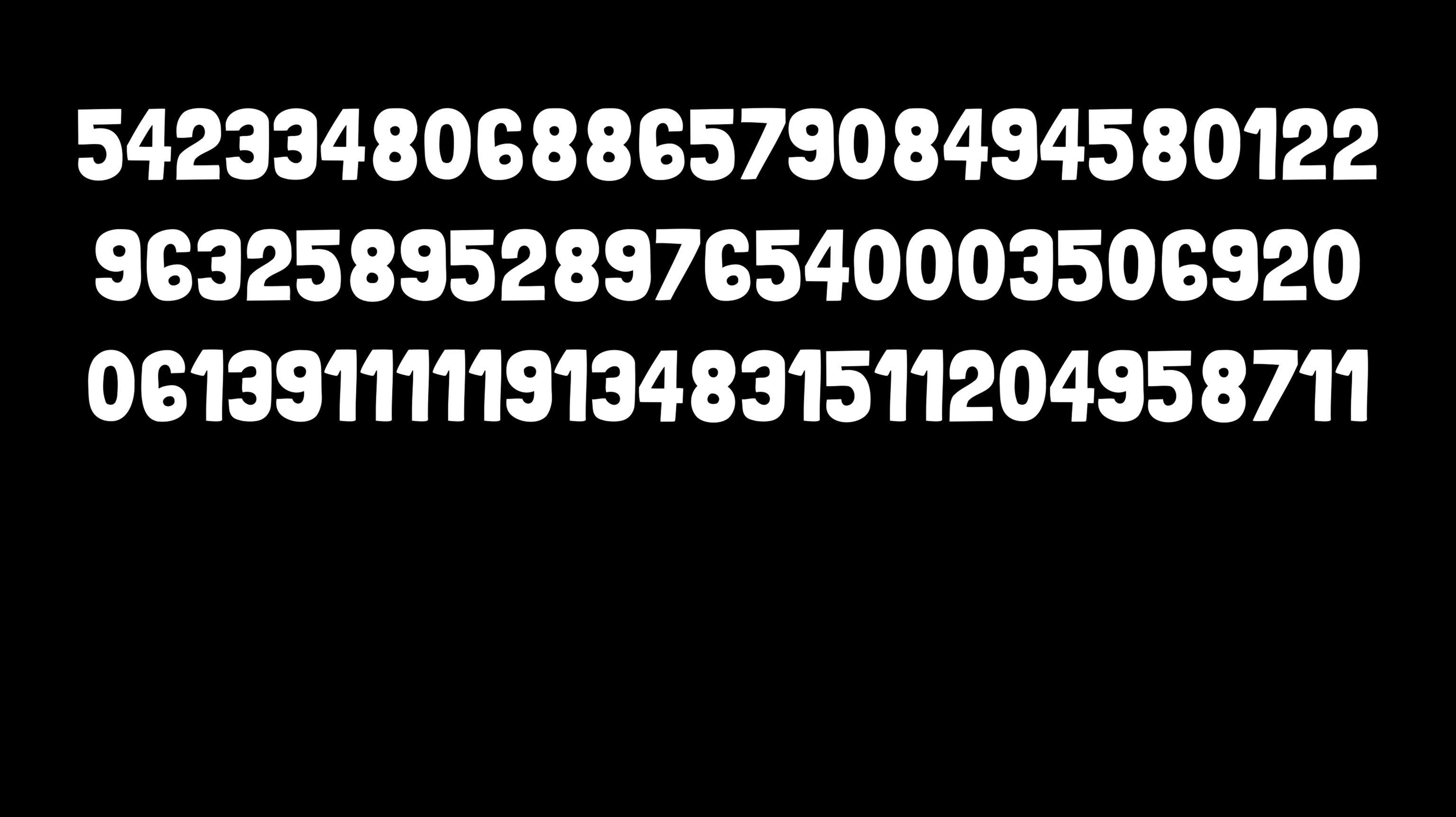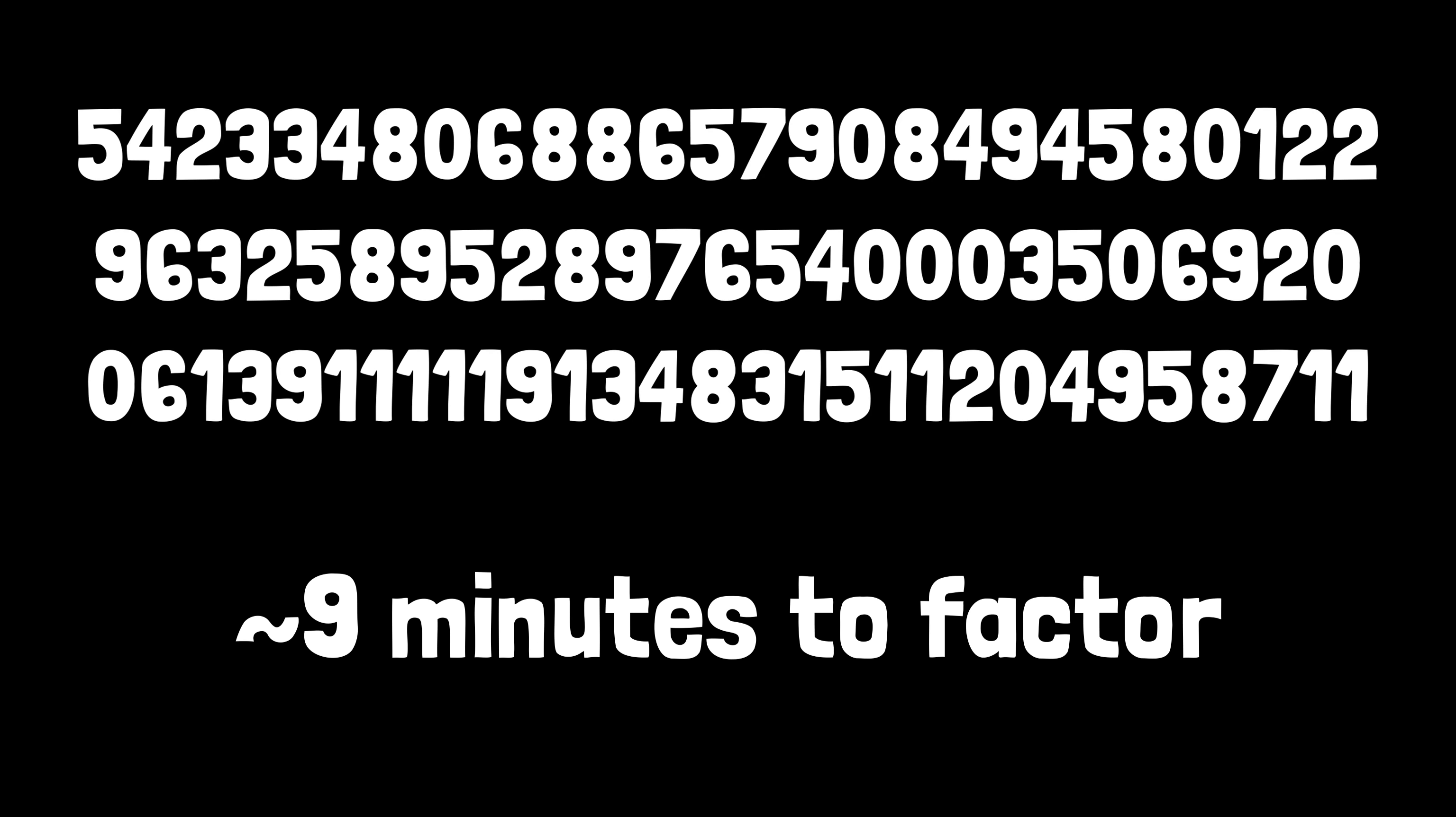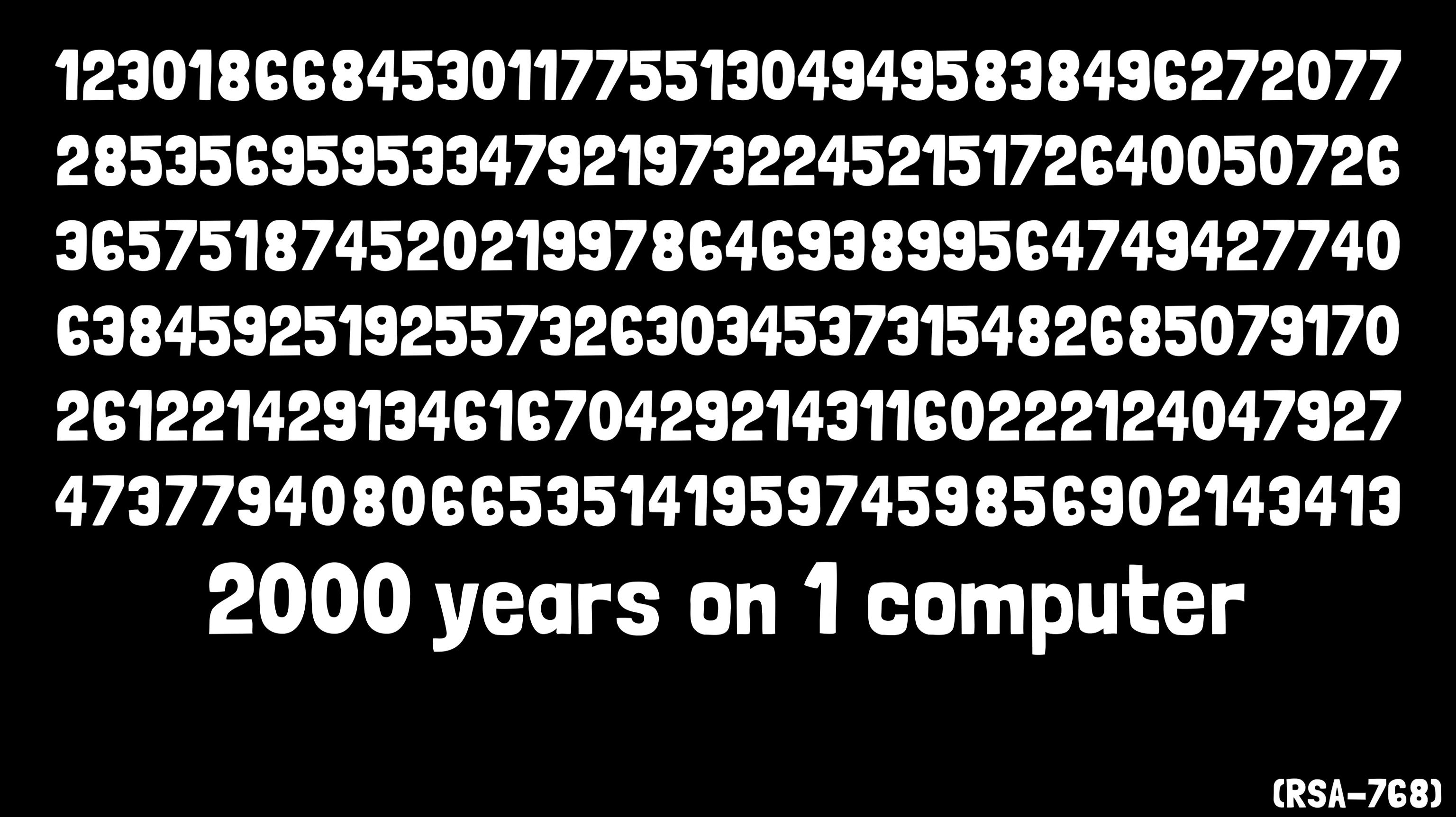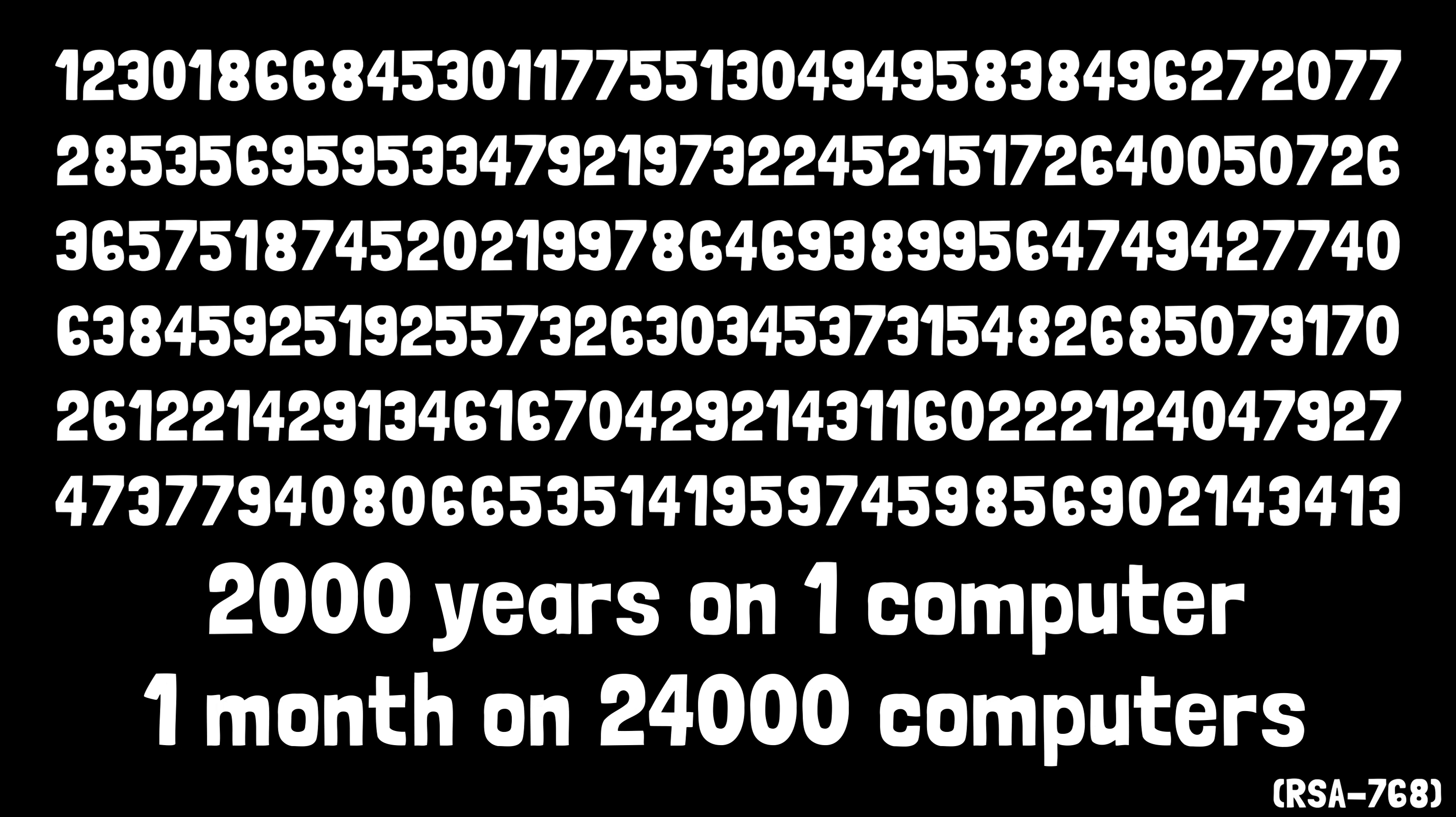For example, my computer took almost 9 minutes to find the prime factors of this number. So if you used this number to encrypt your data, it would only be safe from me for 9 minutes. If, on the other hand, you used a number like the one that took 2000 years of computer processor time to factor, your data would definitely be safe from me and my laptop, but not from somebody with access to a server farm.